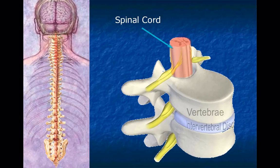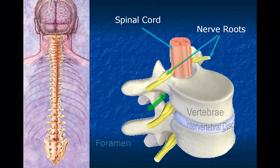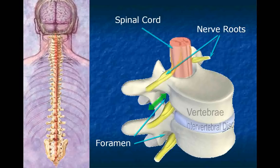There is one large nerve root extending off of the spinal cord between each vertebra on both the right and left sides. Vertebrae are shaped with holes, or foramen, to allow the nerve root to freely pass and exit between each vertebra.